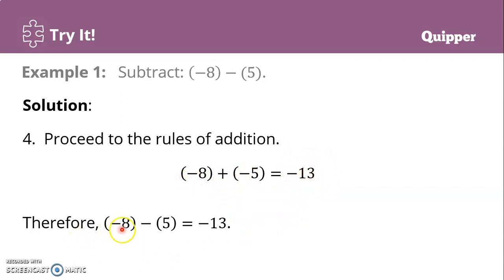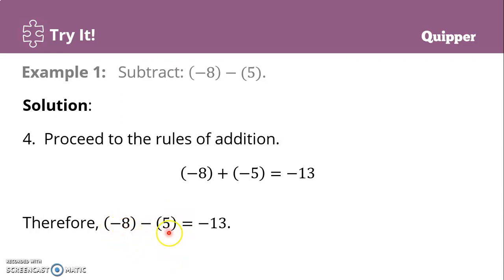Therefore, negative 8 minus 5 is negative 13. You can go directly: since both are negative, simply add 8 and 5 to get negative 13.